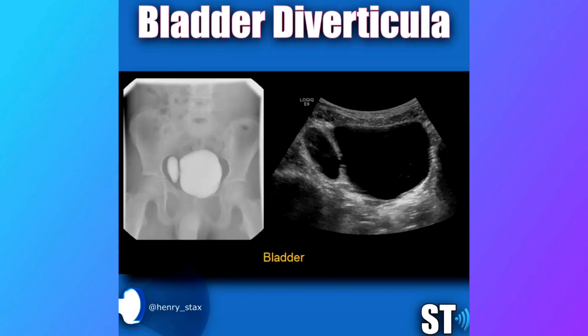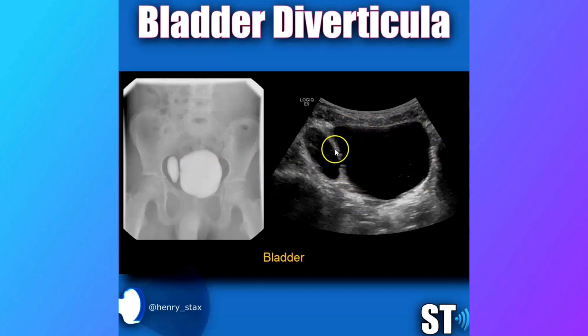Today we're going to go over bladder diverticulum. A bladder diverticulum is an outpouching of the urinary bladder. Here we have two images of the urinary bladder — a transverse ultrasound where you can see a normal bladder, an oval-shaped structure with a channel, and this is a diverticulum. And this is a radiograph with contrast.